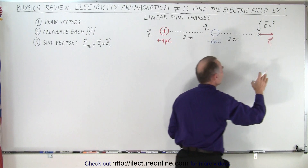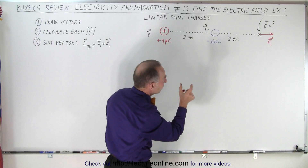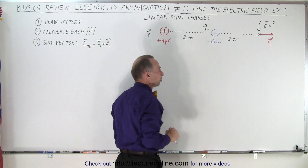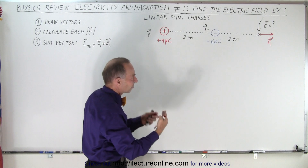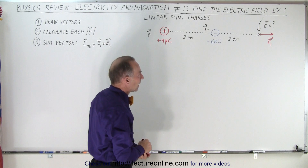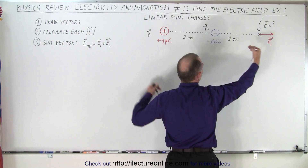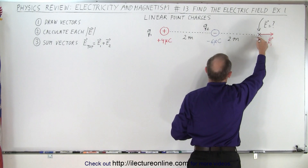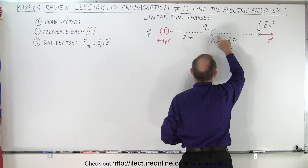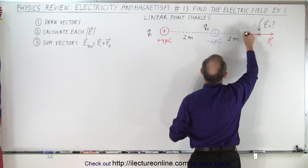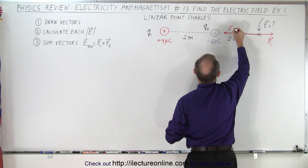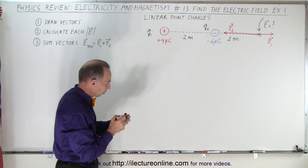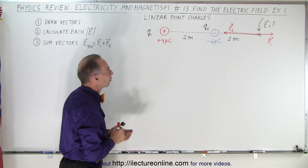We'll call it E1 — the electric field caused by charge 1. It's going to be a relatively weak field because you're farther away from the positive charge, and the magnitude of the positive charge is smaller, so expect a smaller electric field. The electric field caused by Q2 points towards the negative charge, so at this location it points in that direction. Since you're closer to this charge and it's a bigger magnitude charge, you expect a much bigger electric field caused by that charge at this location.